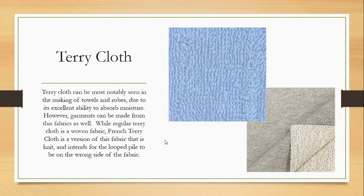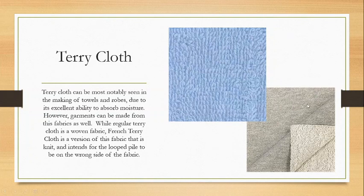When we do see terrycloth used in garments, we'll often see a version called French terry or French terry cloth. It has a looped pile, but where typical terrycloth has loops on both sides, French terry has a smooth right side and a looped wrong side. It's also knit — typical terrycloth is woven, whereas French terry is knit — and we see it very often in sweatpants and sweatshirts.